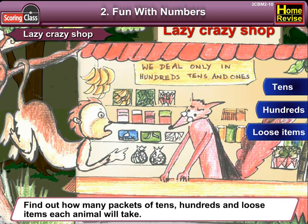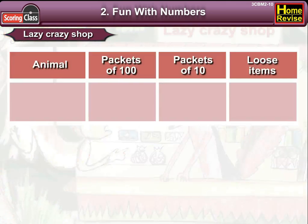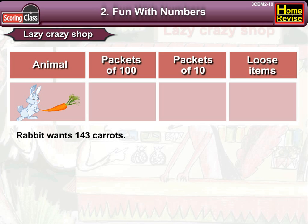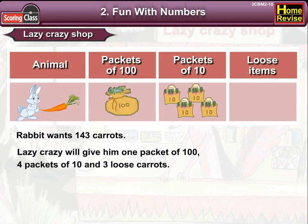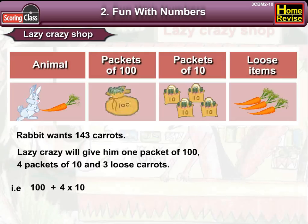Number one: since Rabbit wants 143 carrots, Lazy Crazy will give him one packet of hundred, four packets of ten, and three loose carrots. That is 100 plus 4 into 10 plus 3.